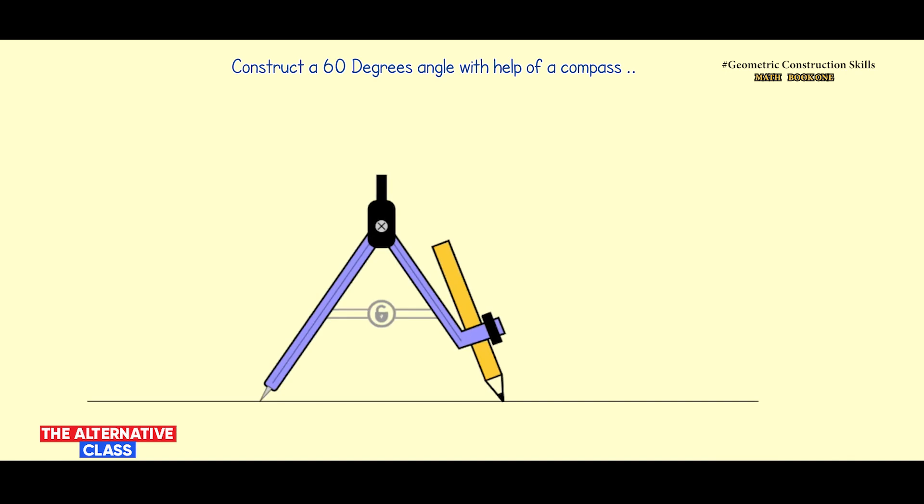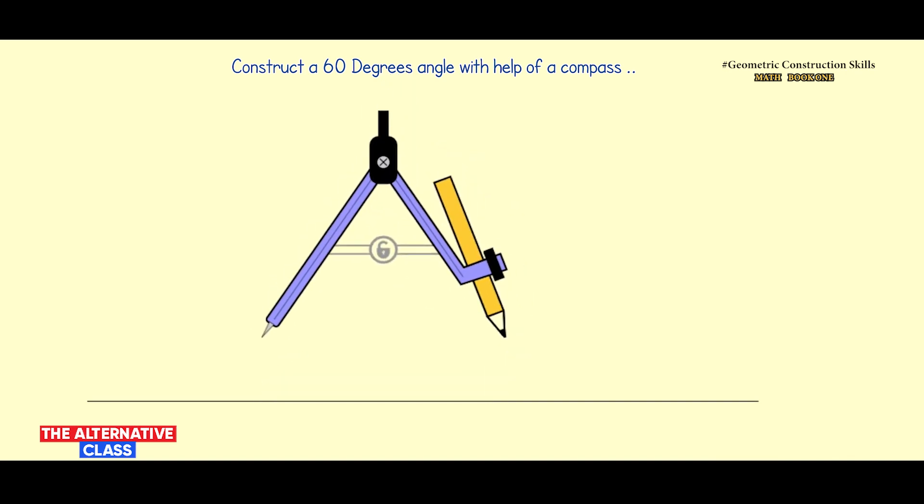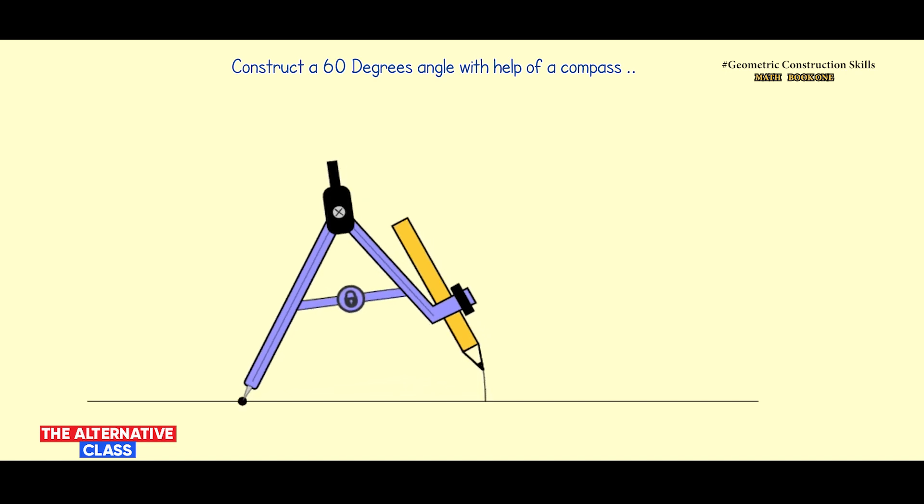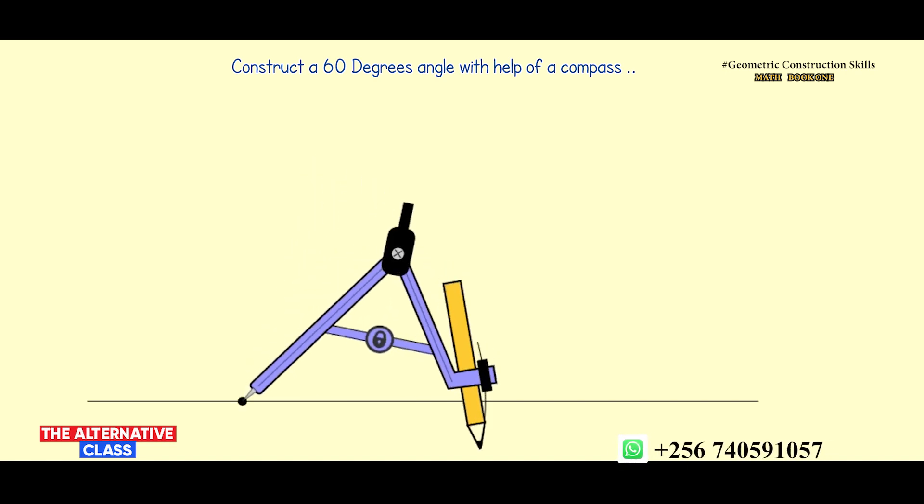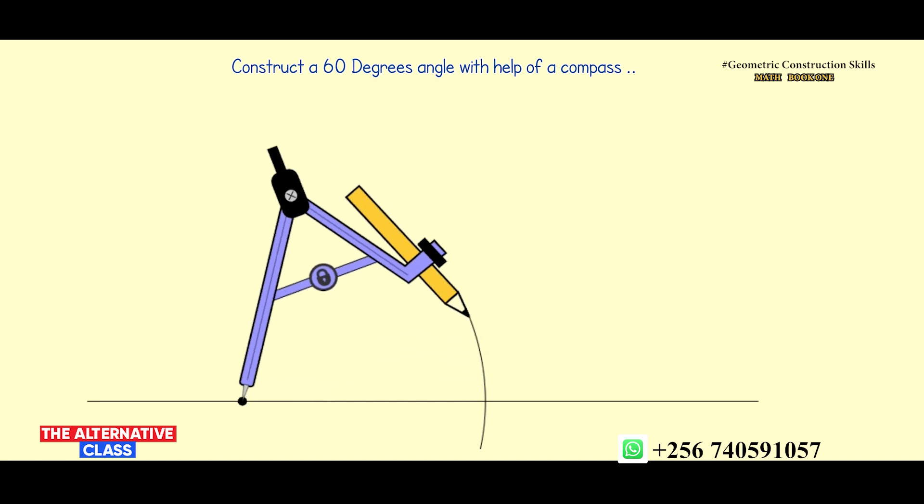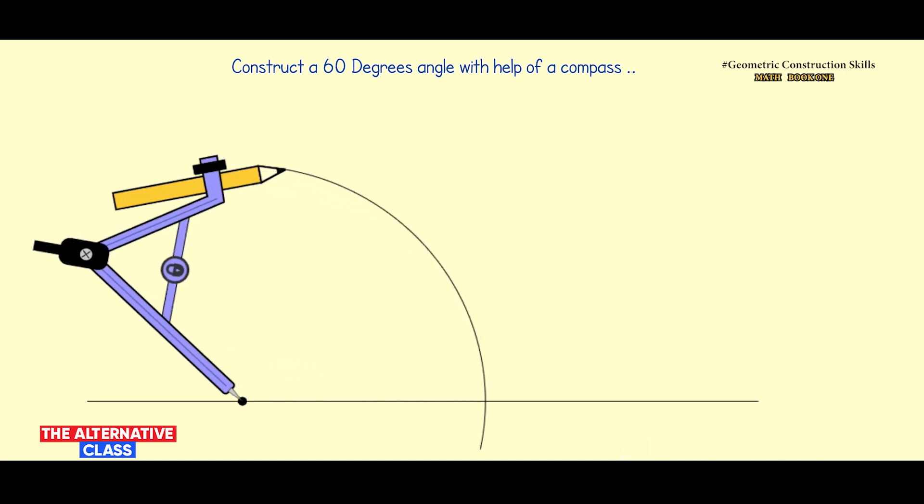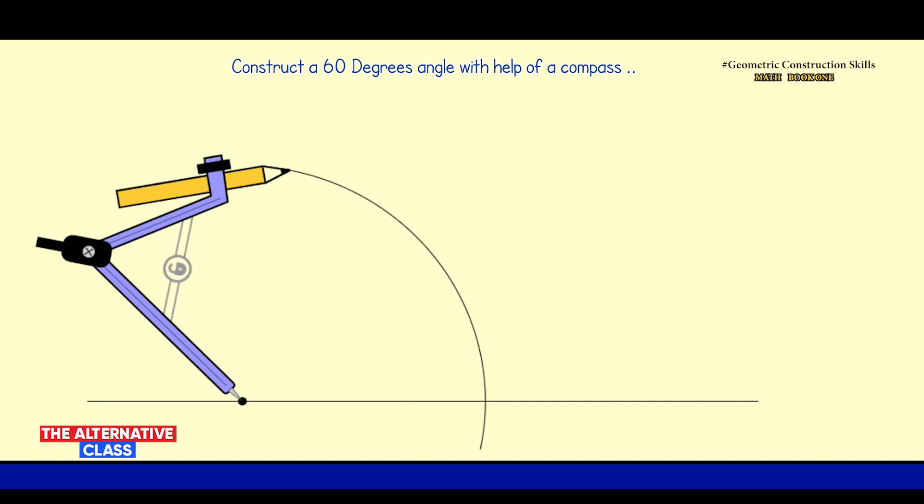I place my compass at any point on the line. After that, I draw an arc on the line and an arc above the line like that. The next step is very important.